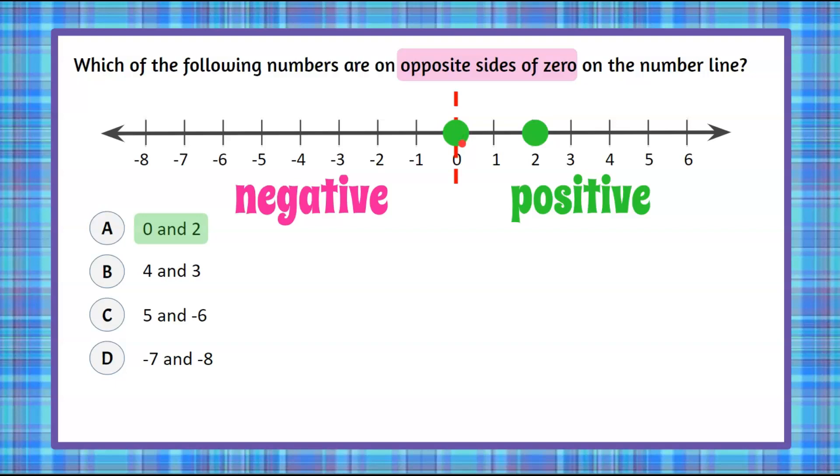Therefore, we can't say that answer choice A is correct because there's nothing on the negative side. We have one on zero and one on the positive side, so it can't be A.